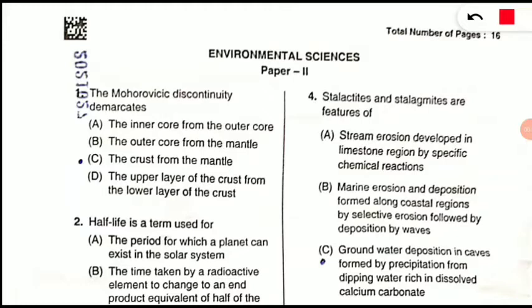Question 1: The Mohorovicic discontinuity demarcates what from what? This is a very simple question. It is the discontinuity between the crust and the mantle — option C is correct. The lower region of the crust and the upper region of the mantle — their division is called the Mohorovicic discontinuity. This is a very frequent exam question; discontinuities of the Earth's crust, mantle, and core are all very important.